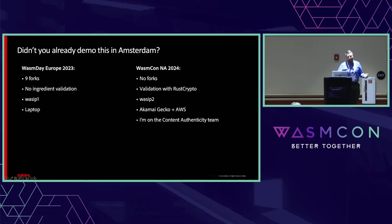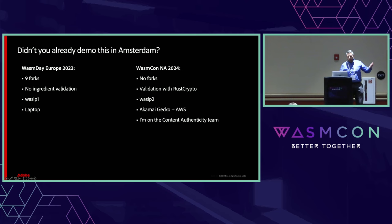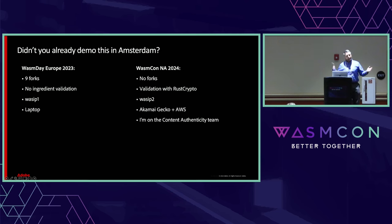I did already demo this in Amsterdam a year and a half ago, but it was a lot different. Back then, I had to fork nine different crates, it was only kind of half working, I didn't have validation, it was WASI P1 with no P2 yet, and it was all just running on my laptop. Now I'm saying you can compile something to WASI and run it across — in this case Akamai, Gekko, and AWS — and have it actually fully work. And also now I changed jobs, so I'm on the team and can actually make this a product.